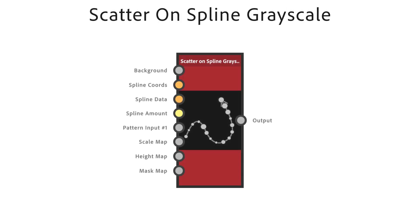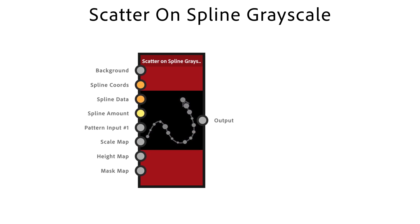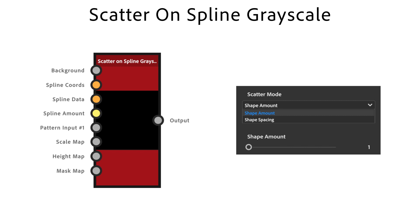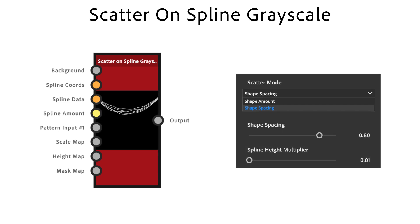The scatter on spline grayscale node is a powerful node to place patterns along the input splines. The scatter mode defines how the patterns are scattered along the splines. While shape amount lets you choose a specific amount, shape spacing automatically adjusts the pattern amount to fit the specified even spacing. The spline height multiplier uses the spline height value to control the pattern luminance.